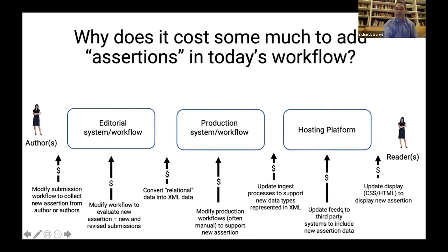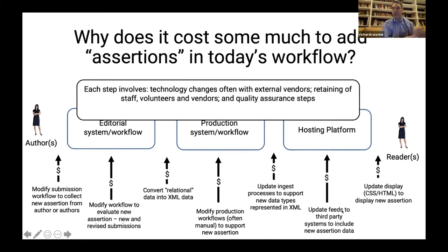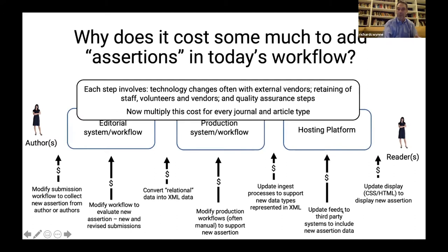If you actually want to make a change to this workflow today, it involves changing multiple technologies, multiple handoffs, retraining staff, retraining volunteers and vendors, and a quality assurance step at each process to make sure you haven't broken the connection. Multiply that out for every journal and every article type, and you can see why our current structure is expensive.